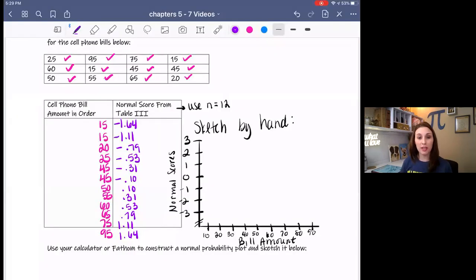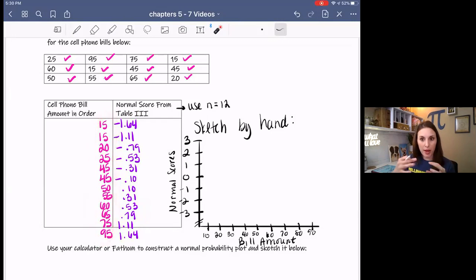If you used table three, you should get these values for the Z scores or the normal scores. And you might have noticed that it is symmetric. So we have, we start at negative 1.64. We go down to negative 1.4 up negative 0.11, negative 0.79, negative 0.53, negative 0.31, negative 0.10. And then we go right back up symmetrically. So when I was doing this originally, I was thinking, well, it's going to have to be linear because we're going, it's symmetric. So we're going to have some below and some above the 0 line. But if these are not spaced like these, then it may not be linear.